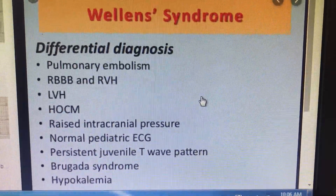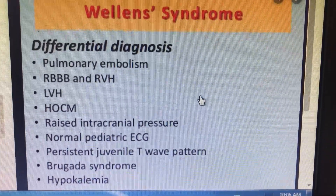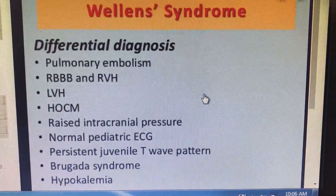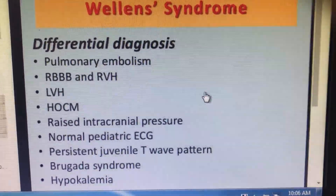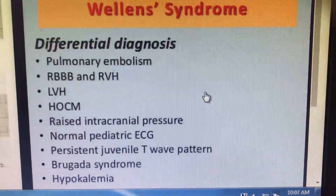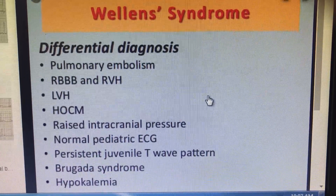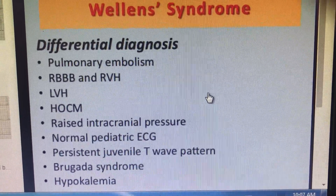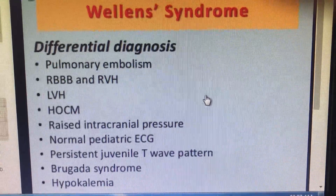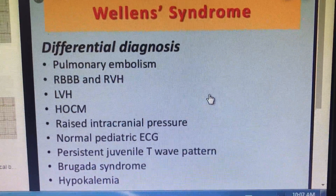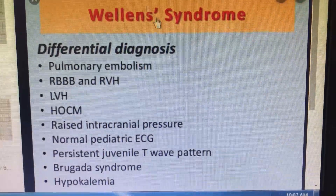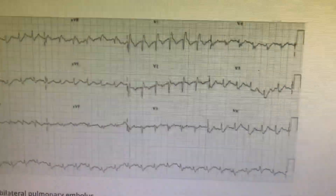In V1 to V4 or V5, deep symmetrical T wave inversions are the hallmark, and these will be considered as differential diagnoses of Wellens syndrome. We will primarily be discussing pulmonary embolism, RVBB, RVH, LVH, HOCM, raised intracranial pressure, normal pediatric ECG, posterior juvenile T wave pattern, and Brugada syndrome — all of these can be considered as differential diagnoses of Wellens syndrome.